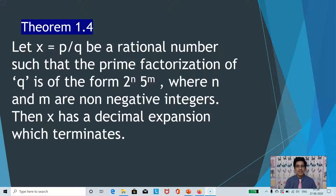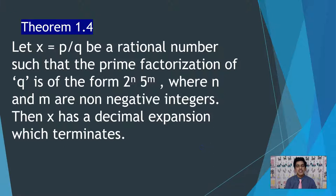That is, if you can write the denominator in the form of 2 power n into 5 power m, then the decimal expansion of that rational number terminates. If the denominator is not of that form, the decimal is non-terminating recurring.